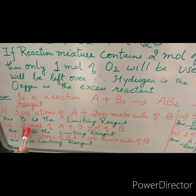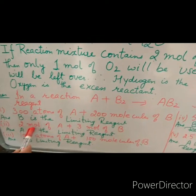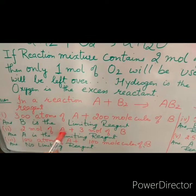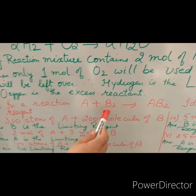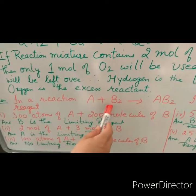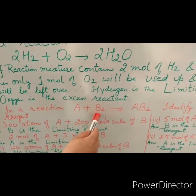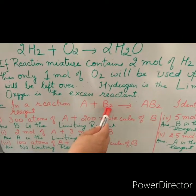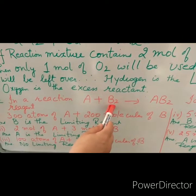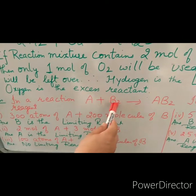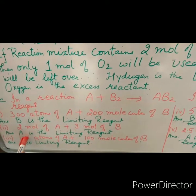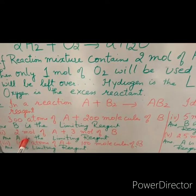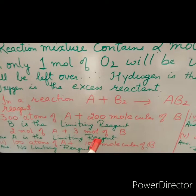Now the second question: if we have 2 mol of A and 3 mol of B₂, what is the limiting reagent? 2 mol of A will react with 2 mol of B₂, so B₂ will be the excess reagent and A will be the limiting reagent. Thus in this reaction, A is the limiting reagent.